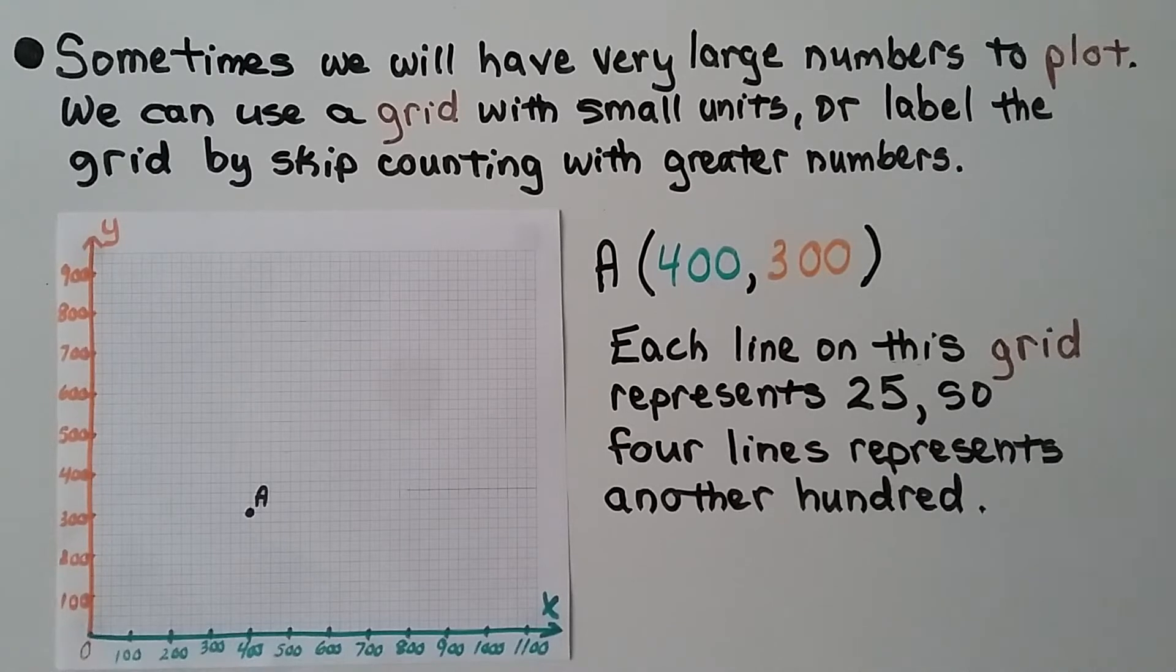Sometimes we will have very large numbers to plot, and we can use a grid with small units, or label the grid by skip counting with greater numbers. Point A is at 400 for x and 300 for y, and each line on this grid represents 25.